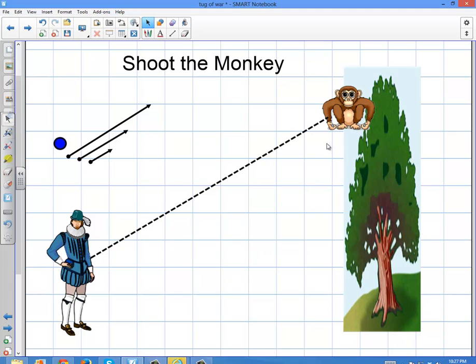There's a hunter here, and there's a monkey in the tree, and he's trying to hunt the monkey. But the monkey drops from the tree and starts falling. So the question is, how does the hunter shoot the monkey?